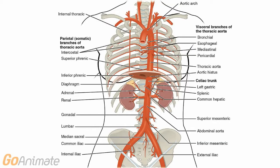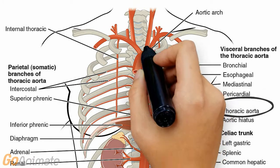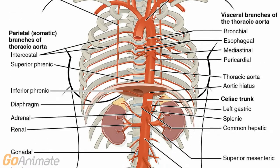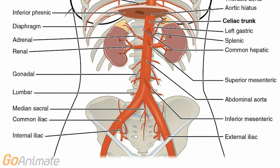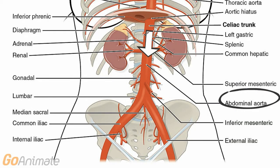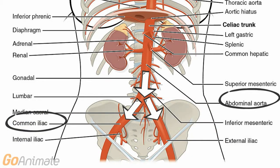Looking at the thorax, we see the thoracic aorta, which contains a number of branches that supply the thorax. The thoracic aorta becomes the abdominal aorta after it passes through the diaphragm. The abdominal aorta contains numerous branches for the abdominal organs, and splits into common iliacs, with each iliac splitting into internal and external iliacs.